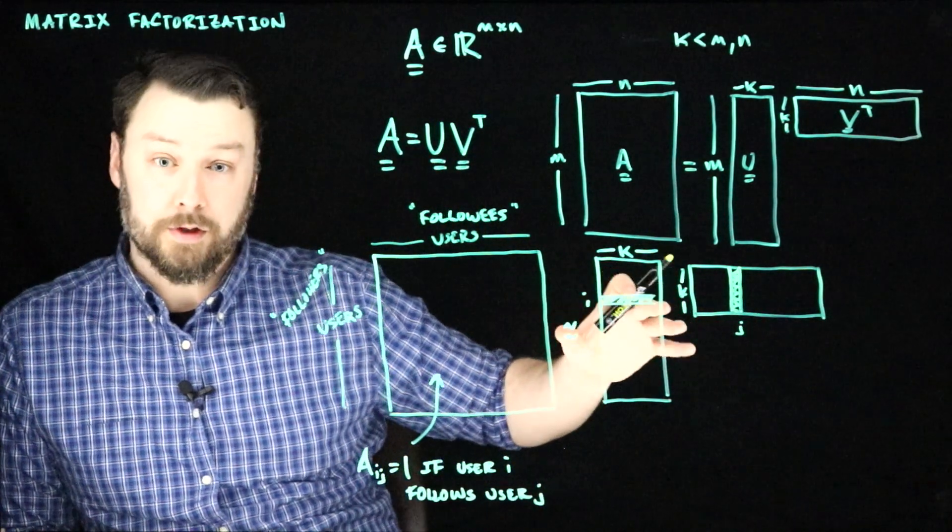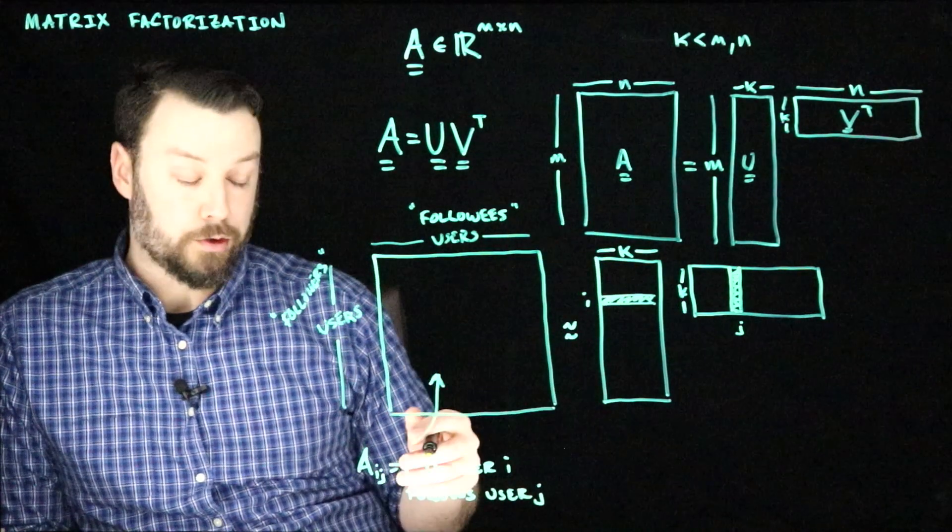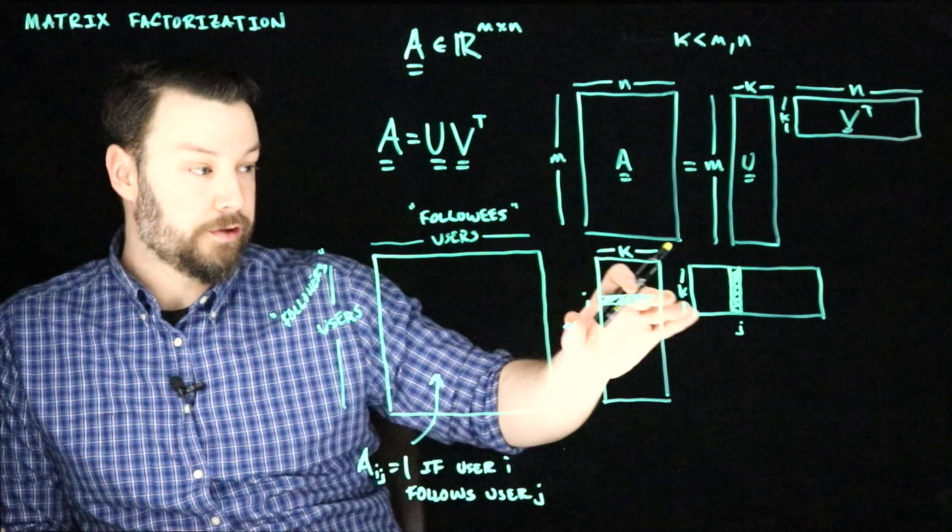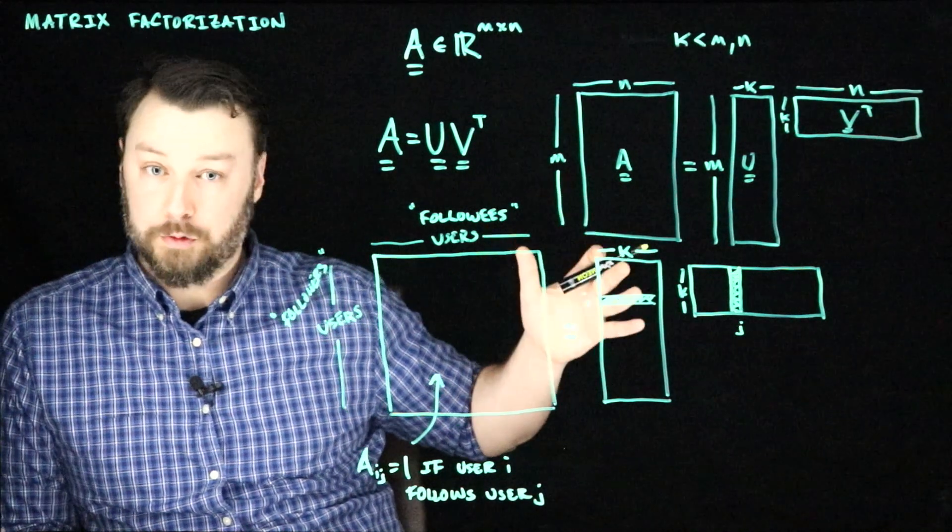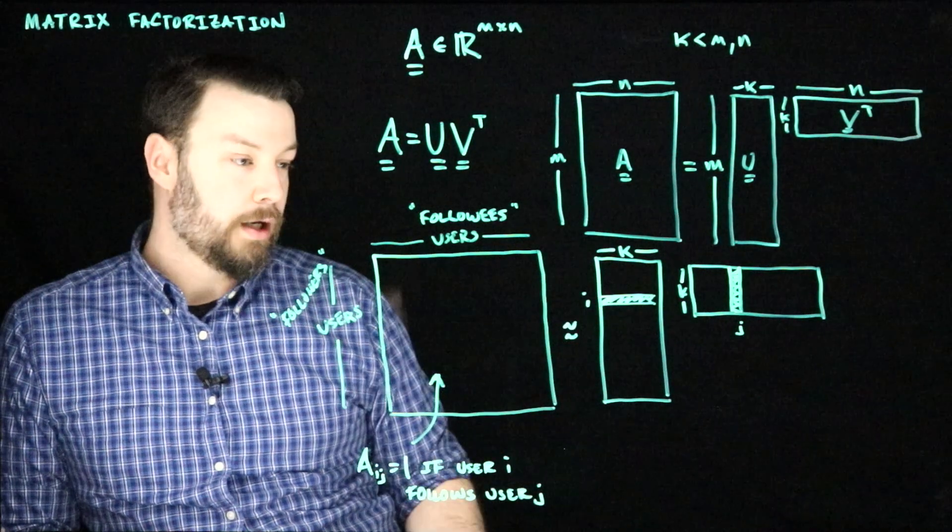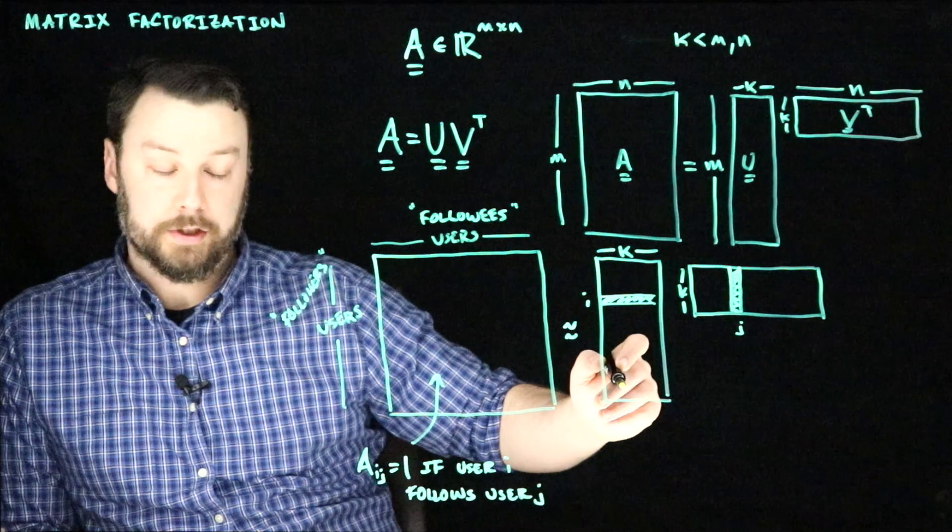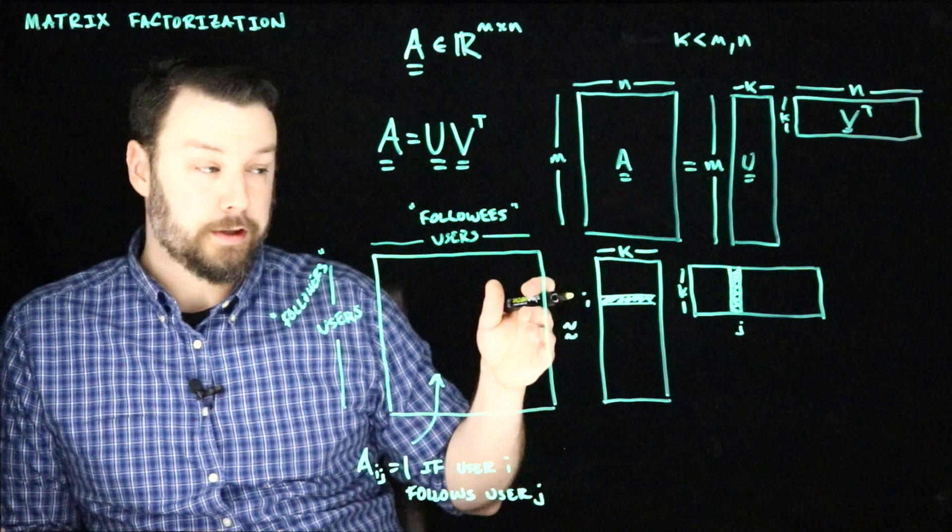So if most of these things are zeros, then the inner product will be zero. And so it will not predict that user i is following user j. But perhaps if they're big, it will tend to be closer to one. So if we fit this to data, what we hope to see and what we do often see in practice is the idea that the different columns of this matrix would represent different interests or different communities.